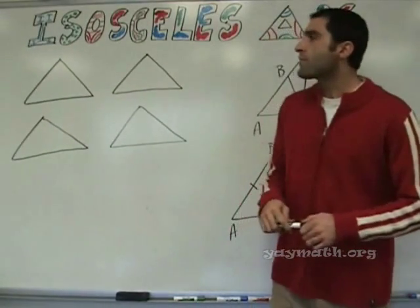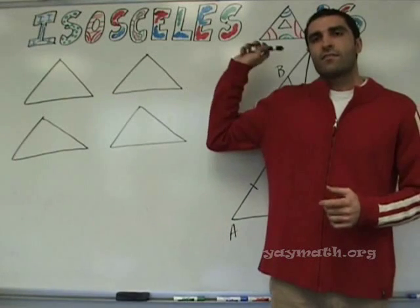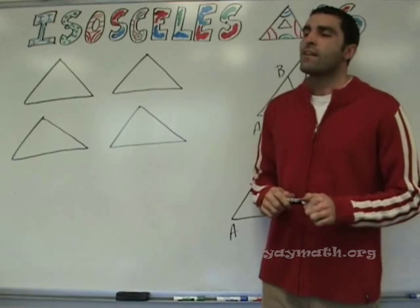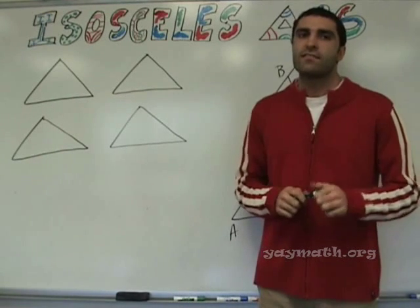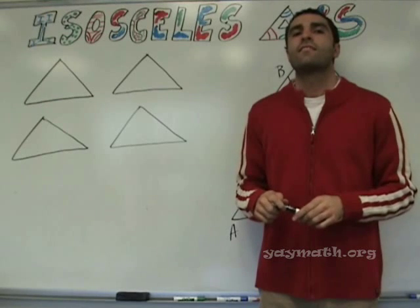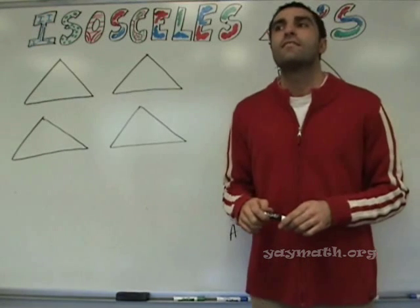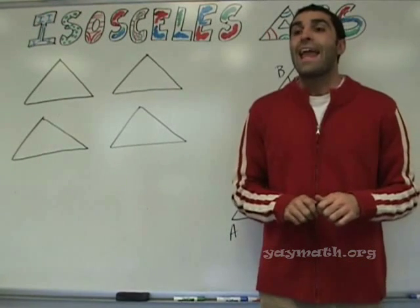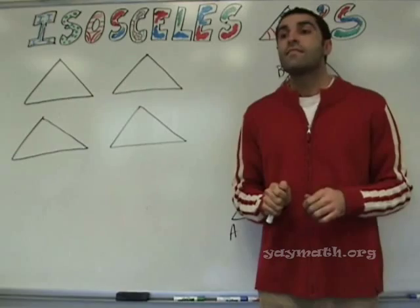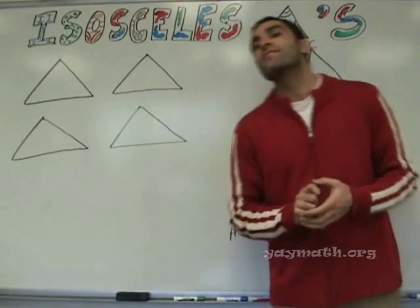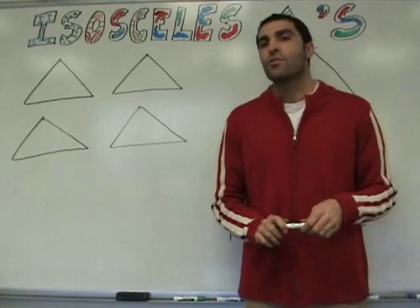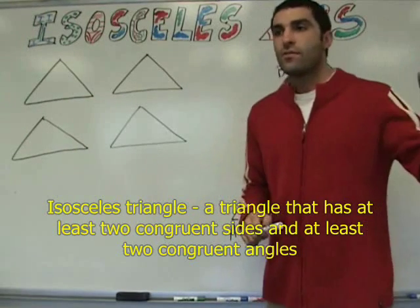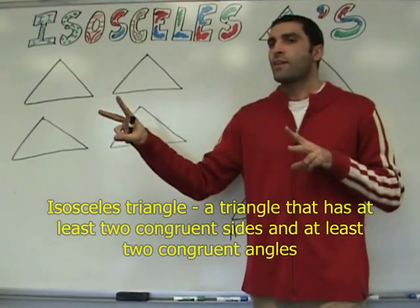We're going to go over the rules for isosceles triangles, spelled isosceles. What is an isosceles triangle? An isosceles triangle is a triangle that has a minimum of two equal sides or angles — a minimum of two congruent sides. And angles — two or more. That's right. So, at least two congruent sides and at least two congruent angles.